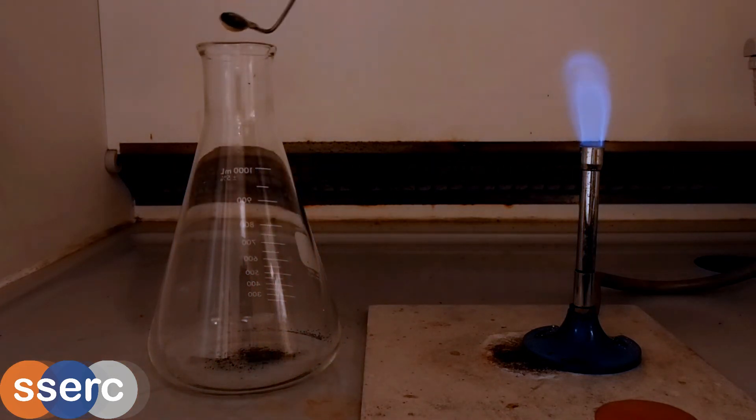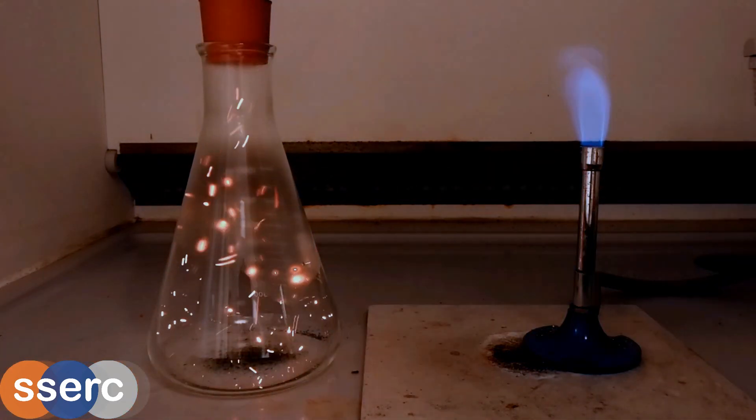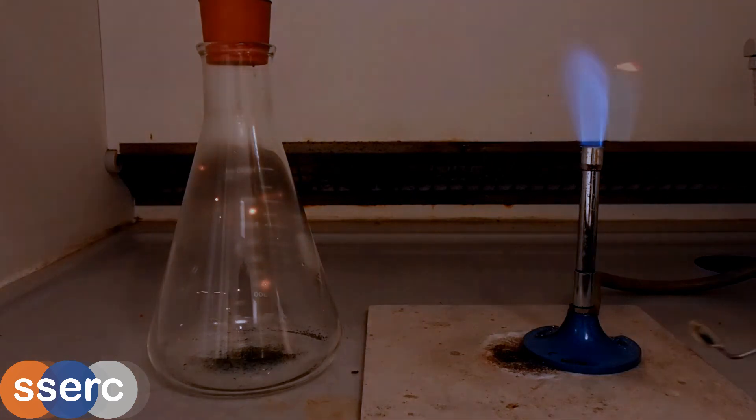Particles of chromium oxide are catalyzing the oxidation of the ammonia and this reaction is exothermic. This produces the heat which causes the particles of chromium oxide to glow brightly.